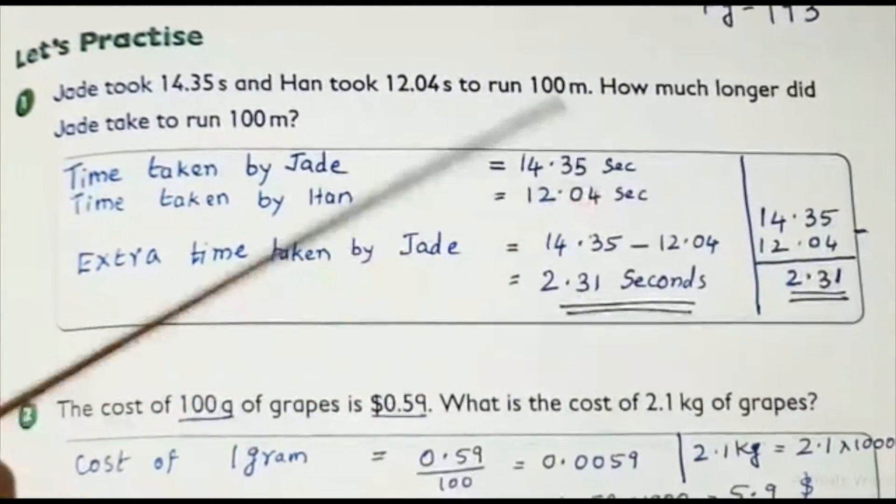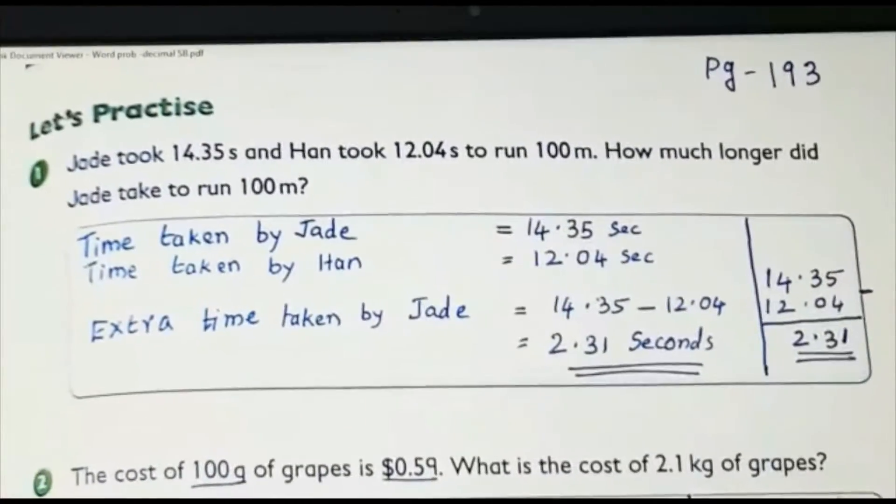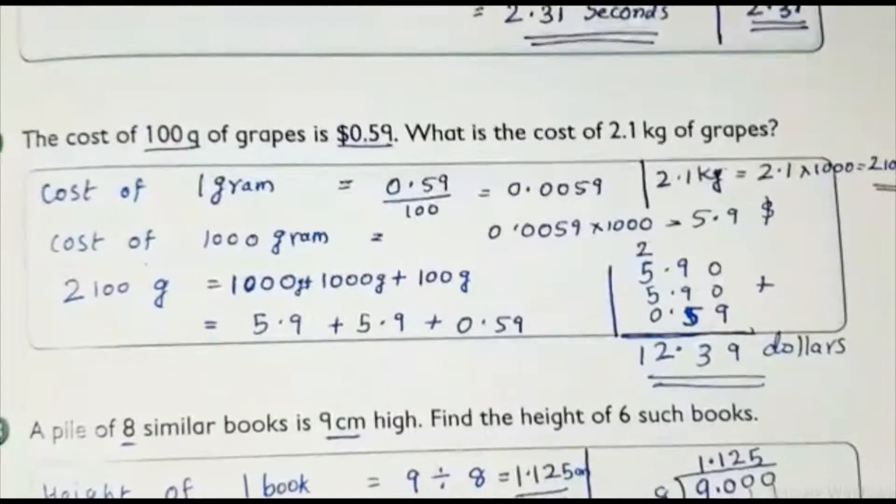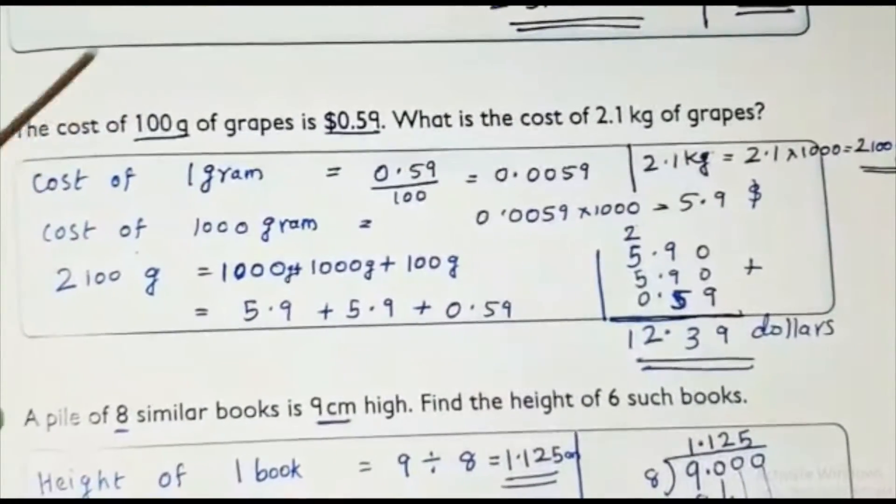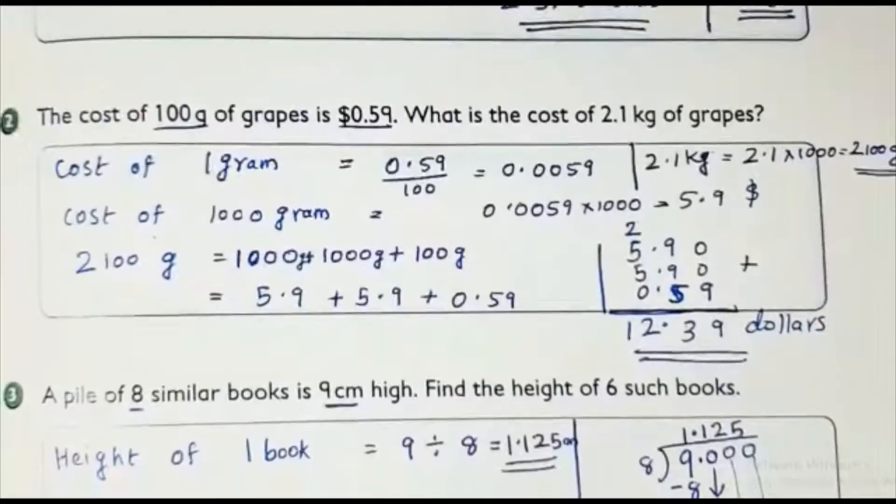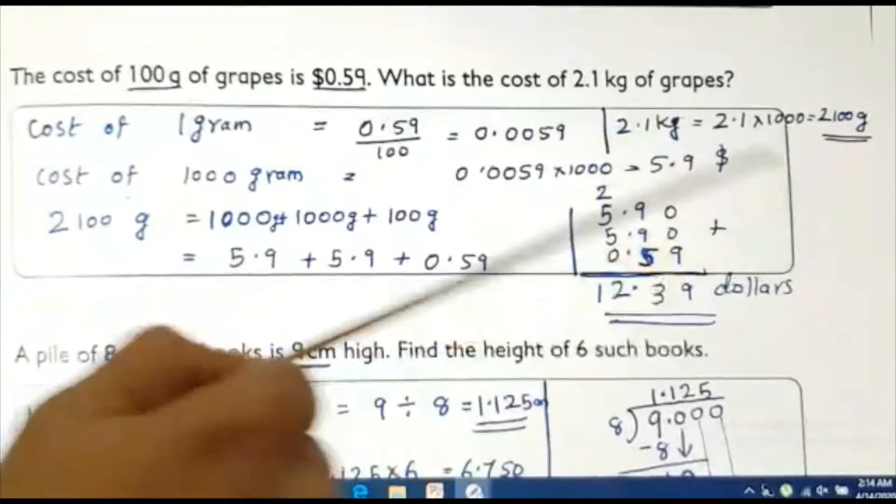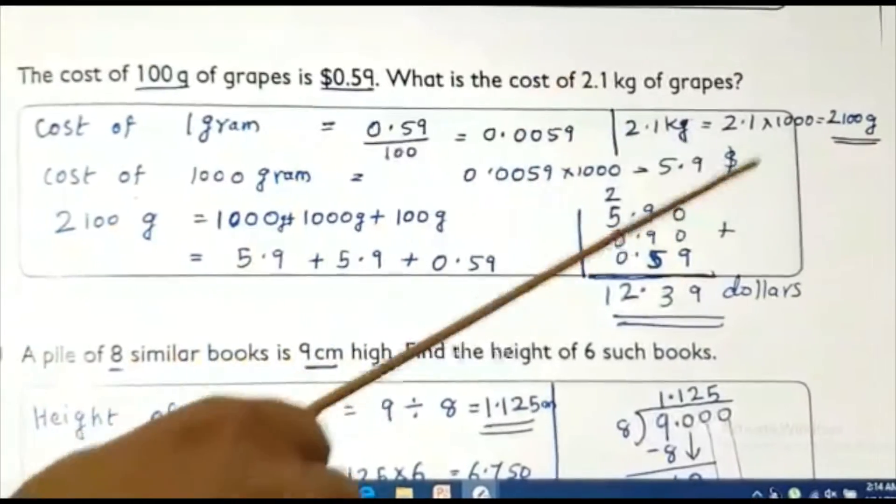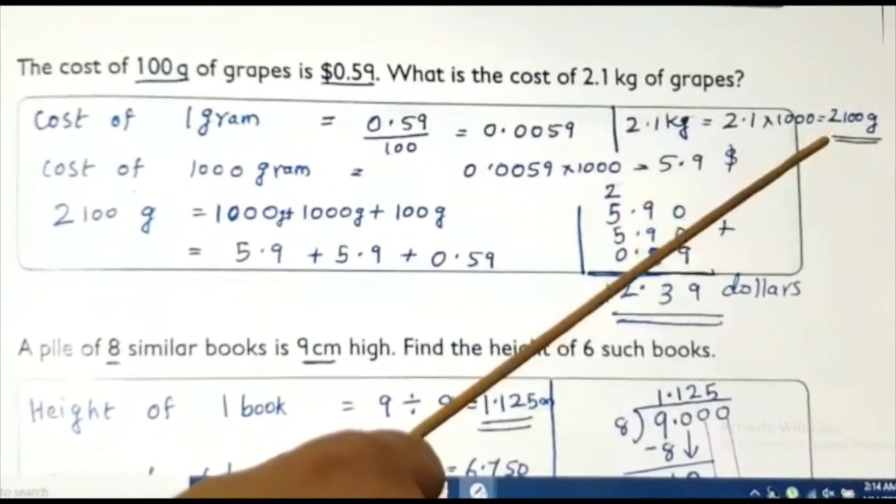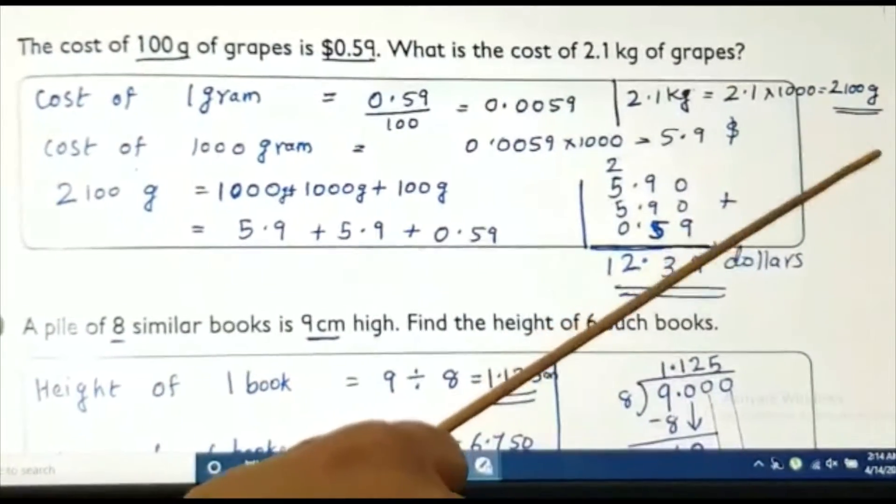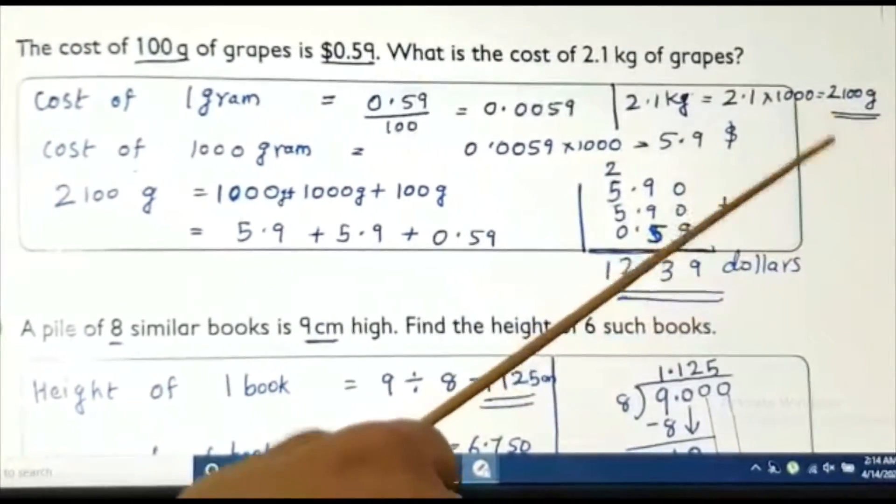Actually, this question is very easy. But next question, it is easy, but you need to think and look. It is a little challenging question. See again, look here. The cost of 2,100 grams. 2,100 grams means I can say it is 2,000 grams plus 100 grams, or 1,000 grams plus 1,000 grams plus 100 grams. Anything you can do.